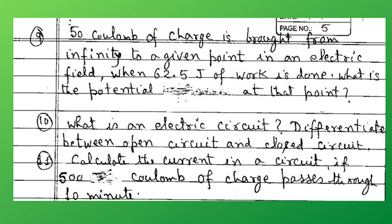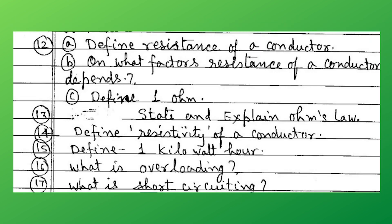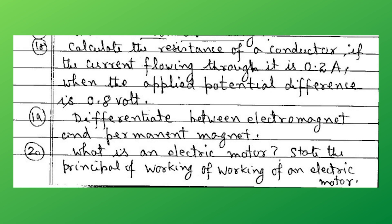What is an electric circuit? Differentiate between the open circuit and closed circuit. Calculate the current in a circuit if 500 coulombs of charge passes through it in 10 minutes. Define resistance of a conductor. On what factors does resistance of a conductor depend? Define one ohm. State and explain Ohm's law. Define resistivity of a conductor. Define one kilowatt hour. What is overloading? What is short circuiting? Sum: calculate the resistance of a conductor if the current flowing through it is 0.2 ampere when the applied potential difference is 0.8 volt. Differentiate between an electromagnet and a permanent magnet.